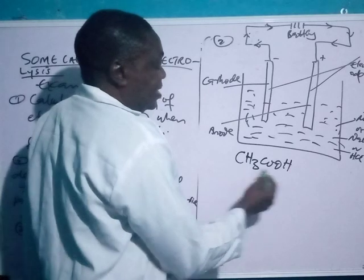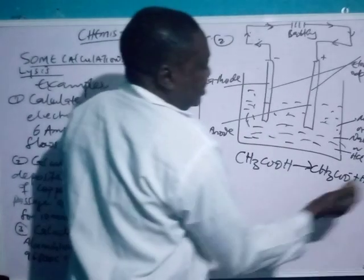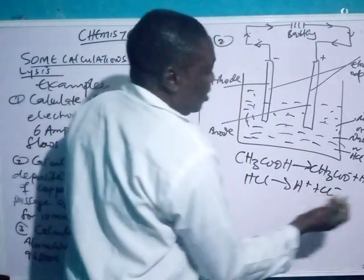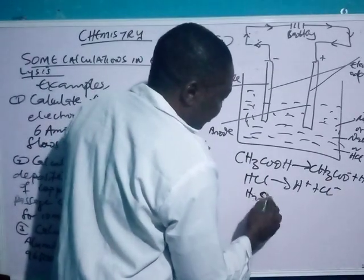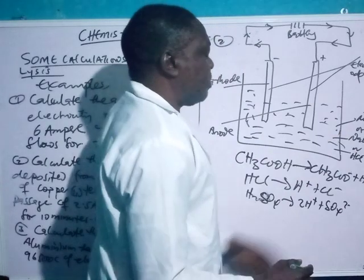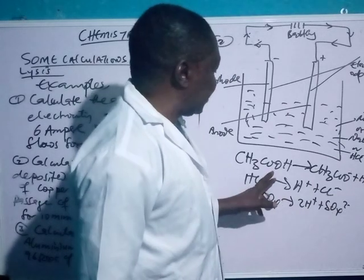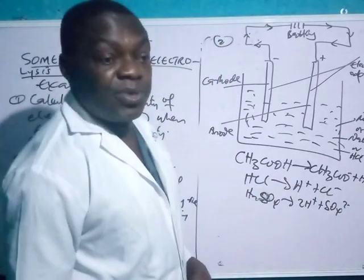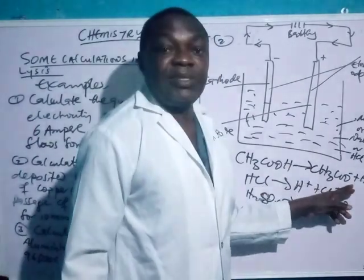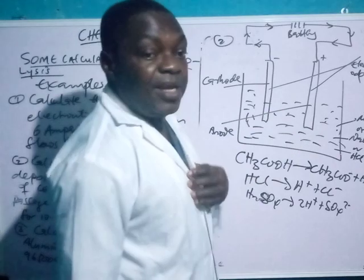Ethanoic acid doesn't undergo total dissociation, unlike strong electrolytes like H₂SO₄ which are totally dissociated. Strong electrolytes include HCl, H₂SO₄, and similar compounds. Ethanoic acid is a very weak electrolyte — in fact, out of every one thousand molecules that undergo the electrolyte process, it is only four that are dissociated while 996 remain in solution.